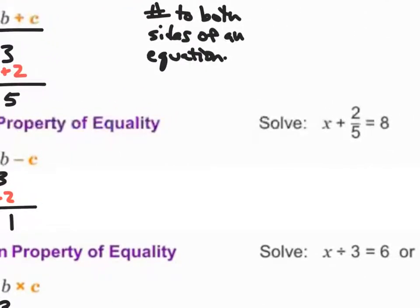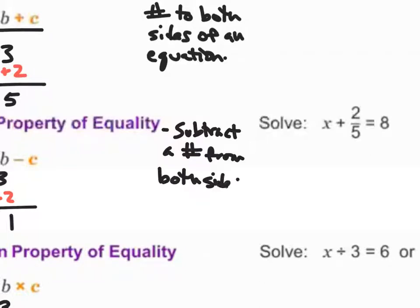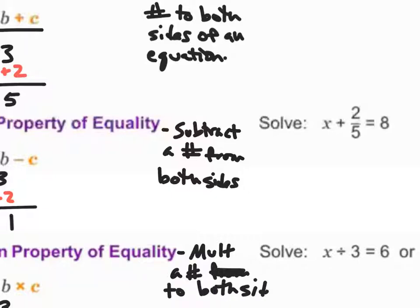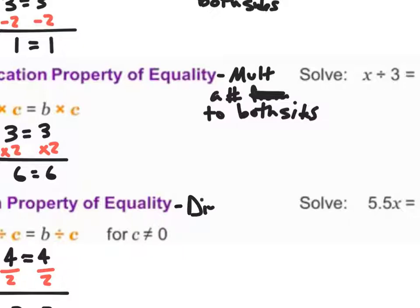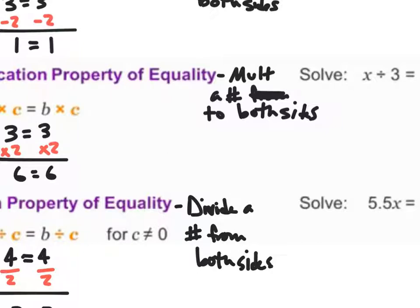The subtraction property of equality is when you subtract a number from both sides. The multiplication property of equality means that you multiply a number to both sides. And the division property of equality means that we divide a number from both sides.